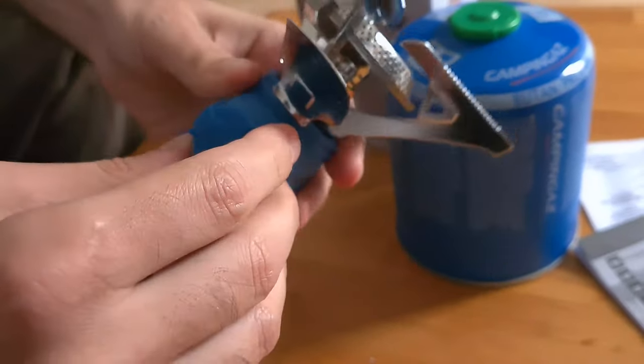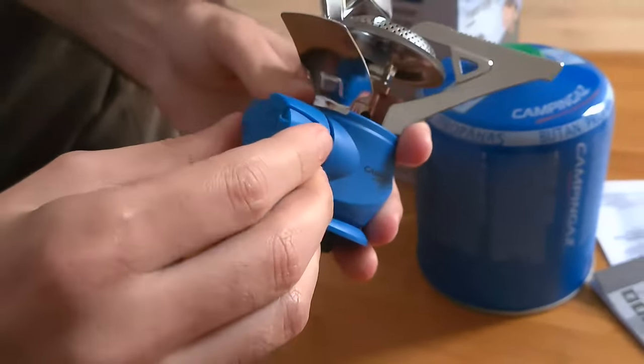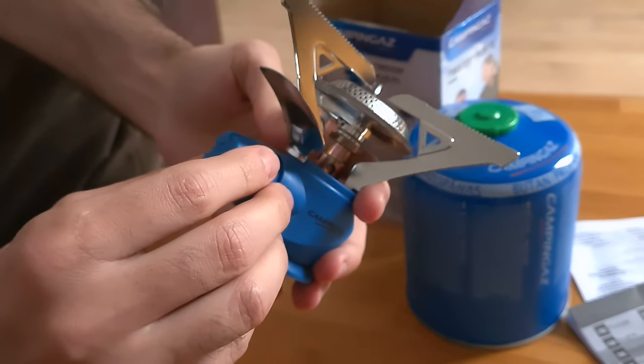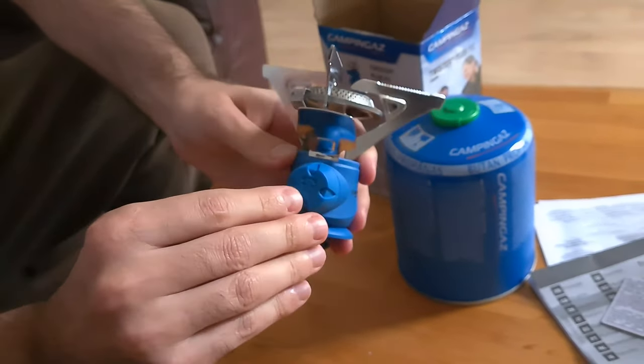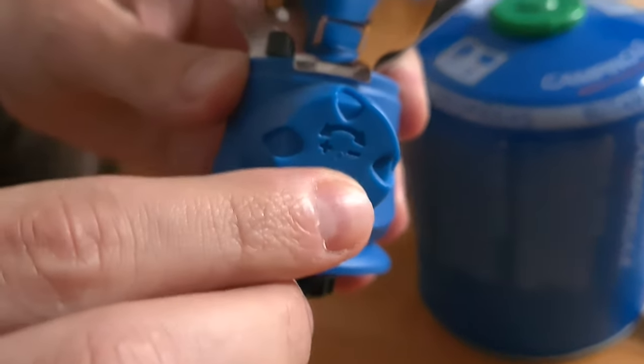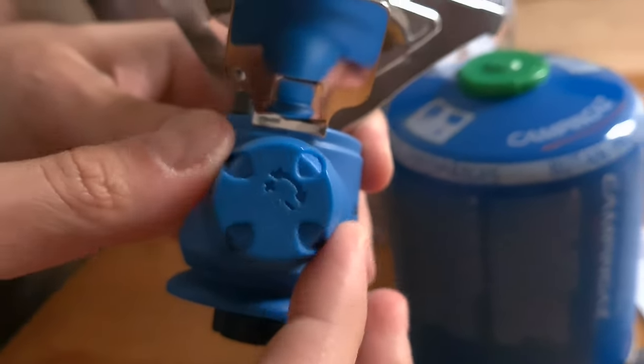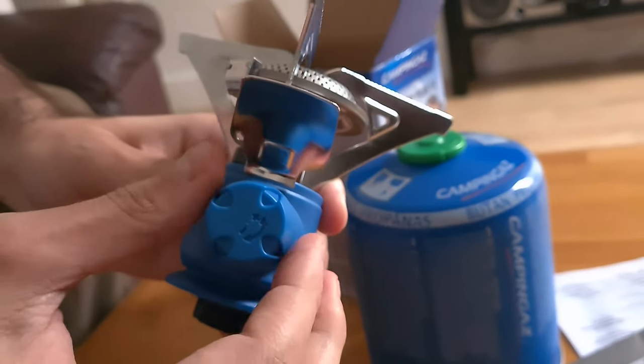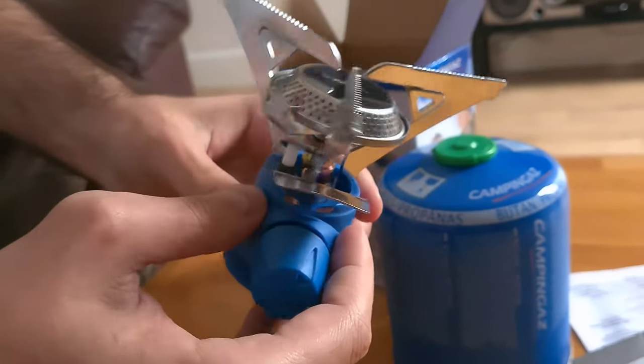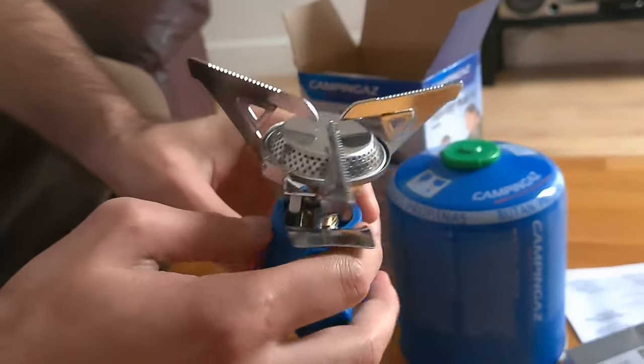And you have this dial, a button which has a plus sign and a minus, so you can set it lower depending on how much flame you need.